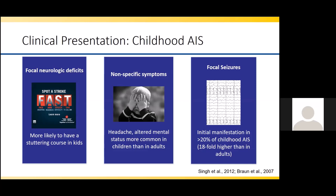The most important difference between adult and childhood stroke presentation is that focal seizures are very common at the onset of stroke in children. With regards to childhood arterial ischemic stroke, that is the initial manifestation in more than 20% of childhood strokes — 18-fold higher than in adults. A very common presentation of stroke in children is a new onset focal seizure with subsequent deficits that don't rapidly improve.